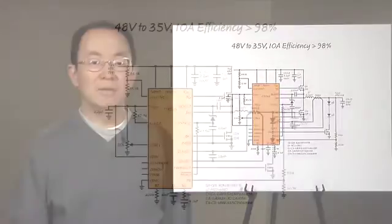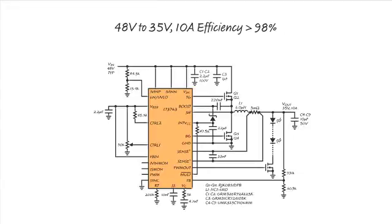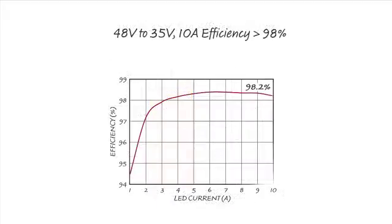Here is an example of the high-efficiency LT3763 driver. The input voltage is 48V and can go up to 60V. The load is a string of 7 LEDs at 10A. Each LED has a maximum forward voltage of 5V, which makes the circuit delivering 350W power. The circuit achieves 98.2% efficiency at full load. The power dissipation is only 6.5W, which can be dissipated comfortably without an extra heat sink.